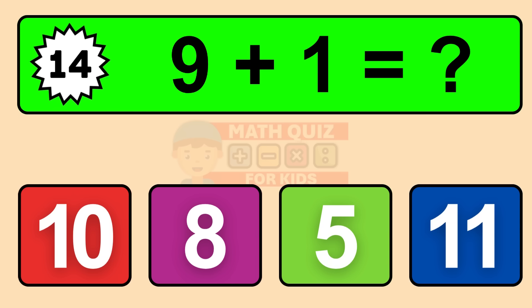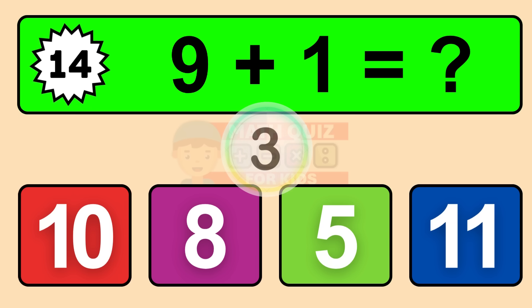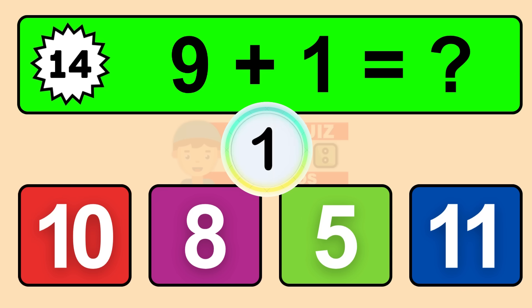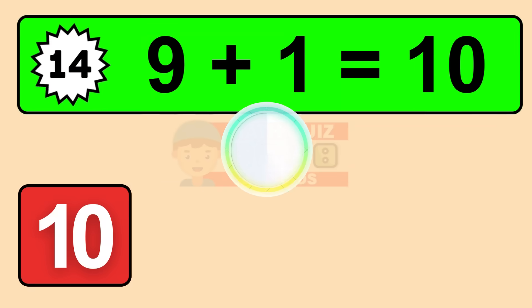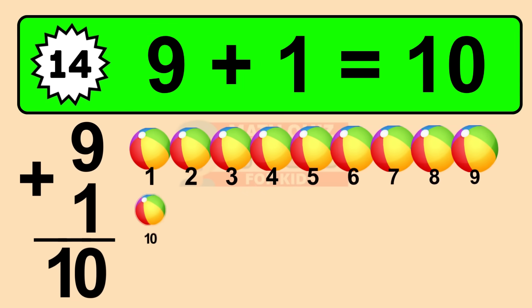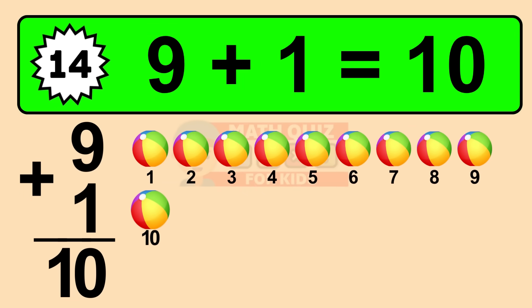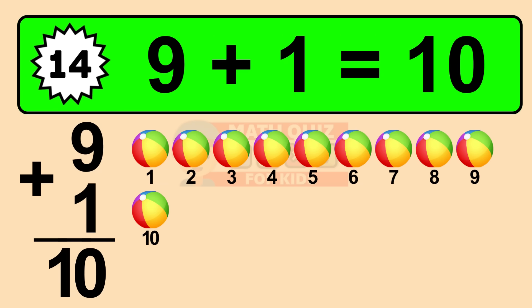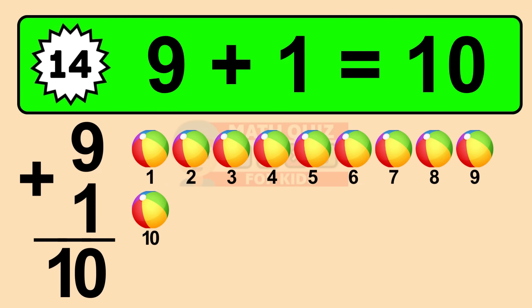Question fourteen: nine plus one equals what? The answer is nine plus one is ten. Let's count it. One, two, three, four, five, six, seven, eight, nine, ten.